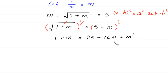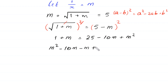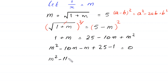Rearranging the expression, we write m squared first, then negative 10m. Moving m to the right gives negative 11m, and moving 1 to the right gives plus 24, so the equation becomes m squared minus 11m plus 24 equals 0.